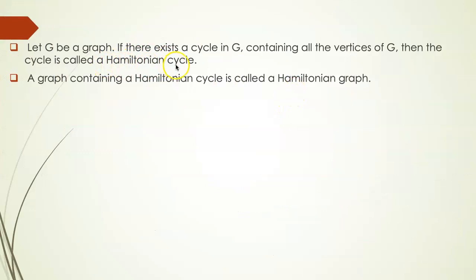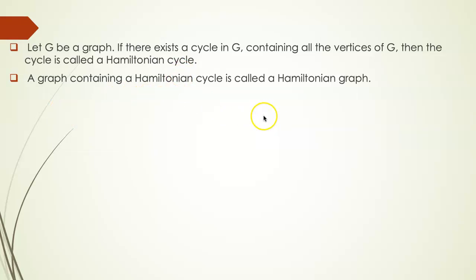Now, given a graph, if there exists a cycle in G containing all the vertices of G, then the cycle is called a Hamiltonian cycle. A graph containing a Hamiltonian cycle is called a Hamiltonian graph. Again, a cycle is a path where no vertex is repeated.